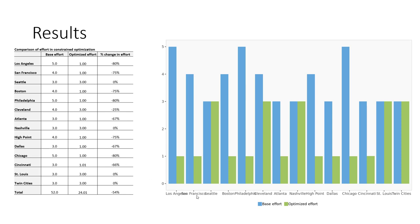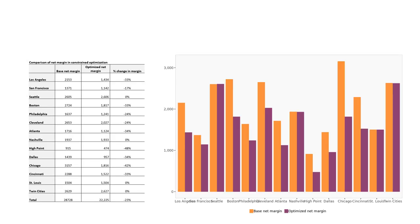In the case of Los Angeles and San Francisco, the best solution possible is actually to cut the salesforce as extreme as possible. Whereas for places like Seattle, Nashville, St. Louis, and the Twin Cities, we want to maintain as high a salesforce as possible to maximize our net margin. When we go from 52 salespeople all the way down to 24, we are absolutely going to be losing some money. The best we can do is lose 23% of our profitability — but this is the absolute best allocation to lose the least amount of money under these constraints.